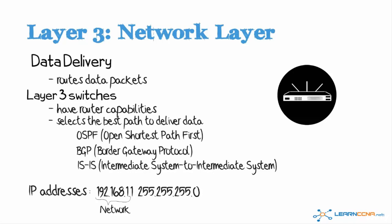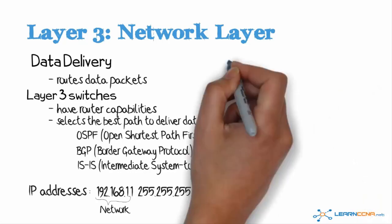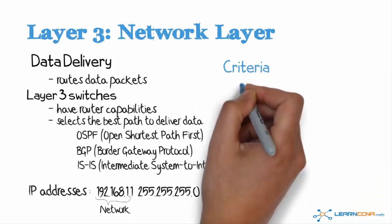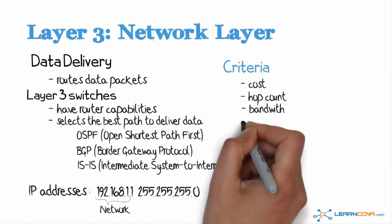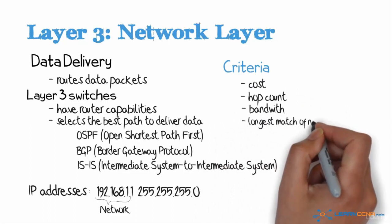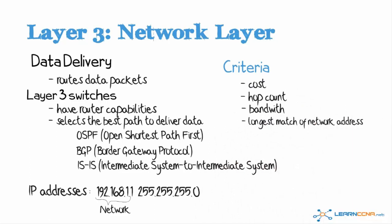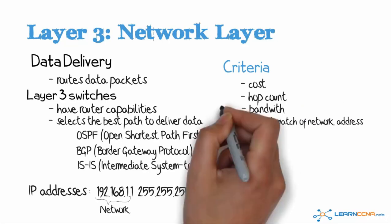Routers or layer 3 switches will determine the best path to route traffic based on criteria such as the cost, or number of hops, or bandwidth, or longest match of a network address. Various criteria can be used to determine the best route. As an example, OSPF determines the best path based on bandwidth.